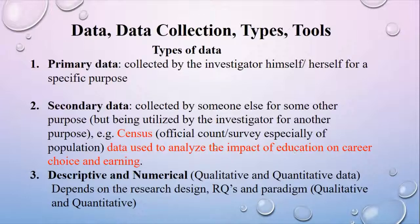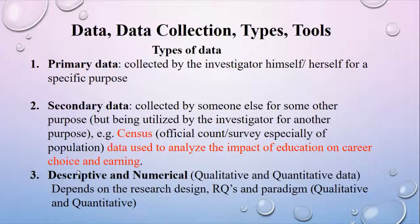For example, census data can be used to study the impact of education on career choice and earnings. This data is originally collected for counting population, but it can be used for doing many types of research related to people, population, their career, or education. Let's talk about the third type, which is descriptive and numerical data.